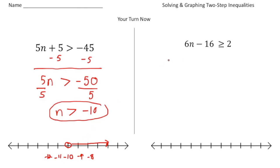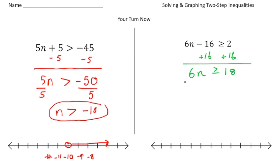The second practice problem: 6 times the number minus 16 is greater than or equal to 2. For this one, first add 16 to both sides, and that gives us 6n is greater than or equal to 18. Then divide both sides by 6, and that leaves us with n greater than or equal to 3, since 18 divided by 6 is 3.